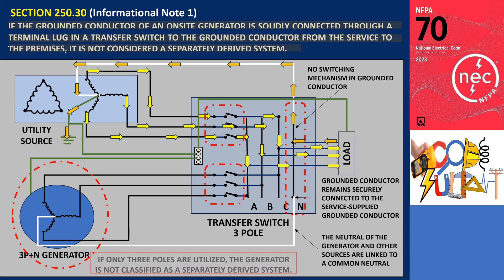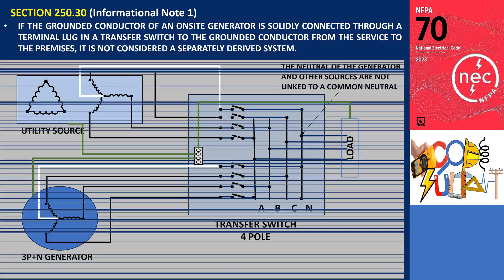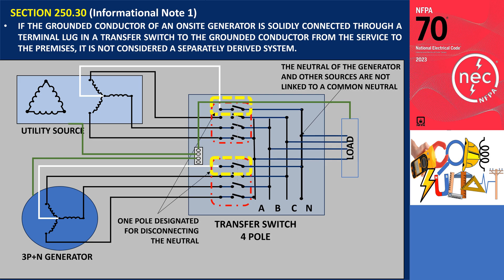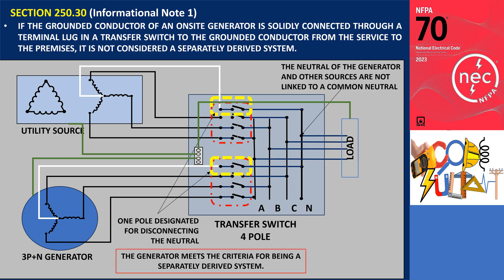If a four-pole transfer switch is utilized, with one pole designated for disconnecting the neutral, then the generator meets the criteria for being a separately derived system.